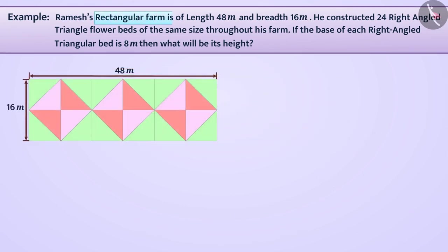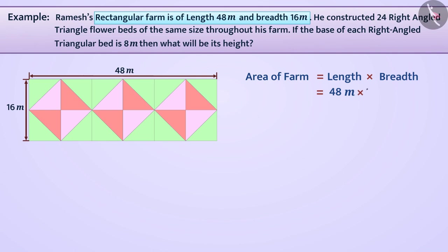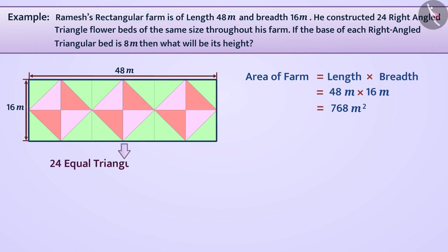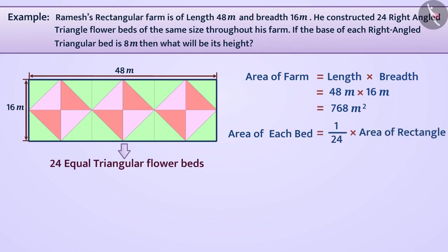Since the length of the rectangular farm is 48 meter and breadth is 16 meter, the area of the farm will be length multiplied by breadth, equal to 48 meter multiplied by 16 meter, which is equal to 768 square meter. This area is divided into 24 equal triangular flower beds, so the area of each bed is 768 square meter divided by 24, which is equal to 32 square meter.